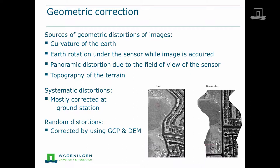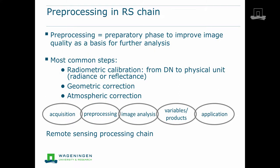Geometric distortions in a remote sensing image can be caused, for instance, by the curvature of the earth, the rotation of the earth during image acquisition, panoramic distortions towards the edge of an image, or the topography of the terrain. These are systematic distortions that are mostly already corrected at the ground receiving station before sending the image to the user. Remaining systematic errors, and particularly random errors, mostly need to be corrected by the user analyzing the image. For this, ground control points, sometimes in combination with a digital elevation model, can be used. At the right, we see an example of a geometric correction applied to an airborne image that was severely influenced by the roll of the aircraft.